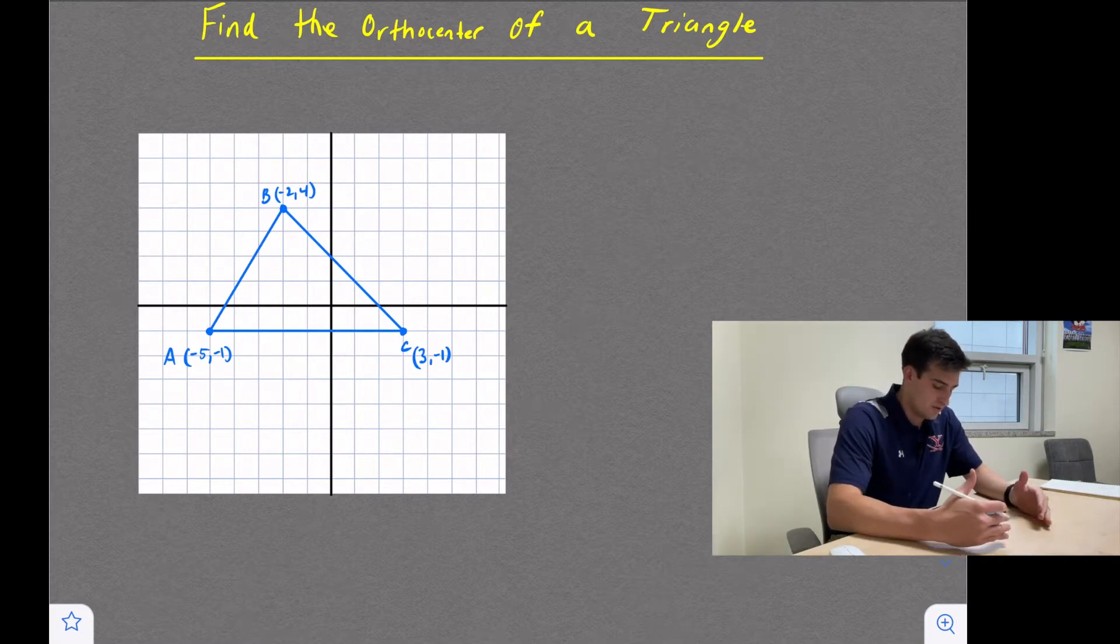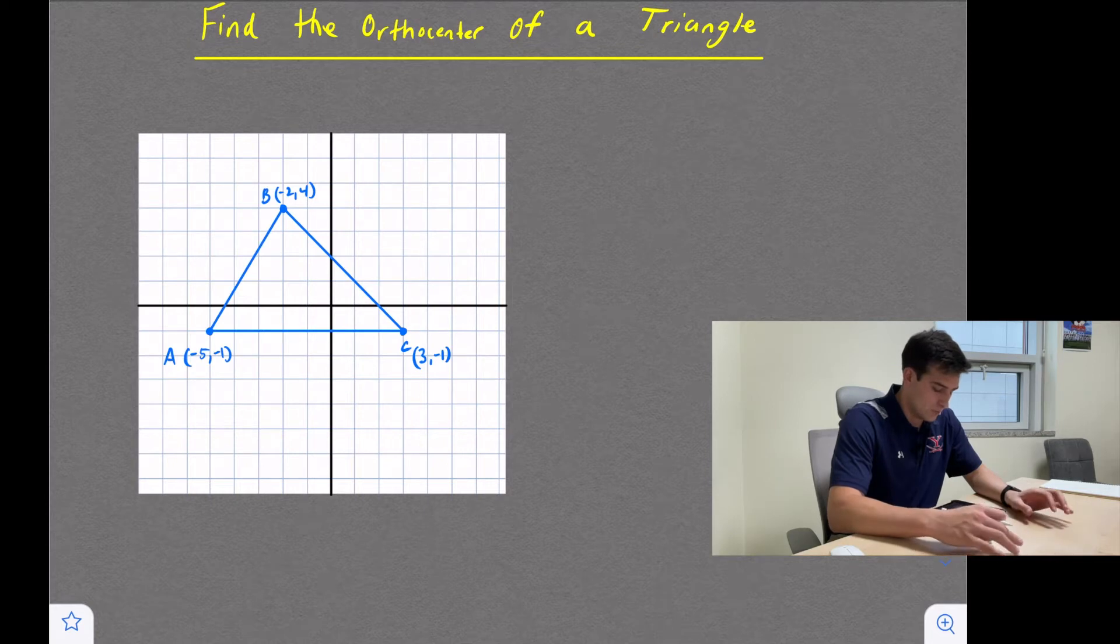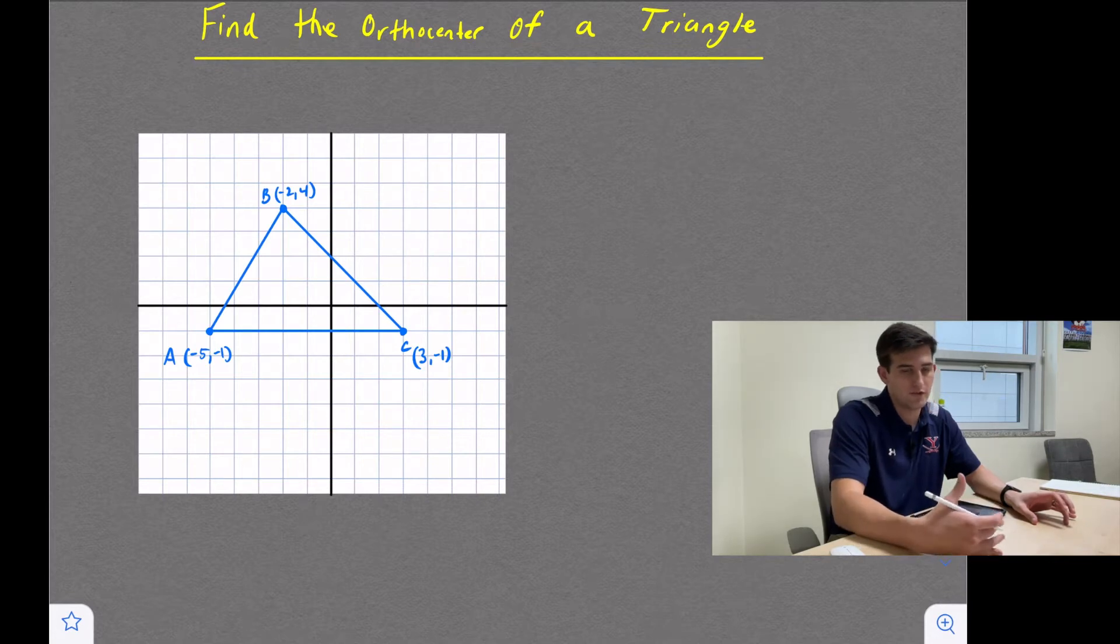So we look at this triangle ABC, and one side in particular stands out. Side AC. It's a horizontal segment, so it's very easy for us to draw a perpendicular segment. It's just a vertical line.